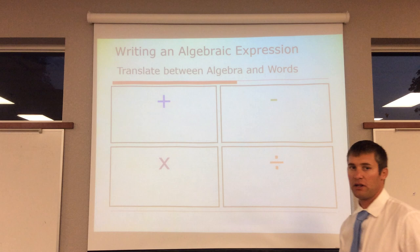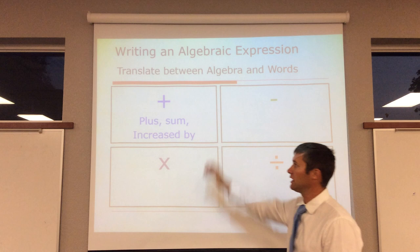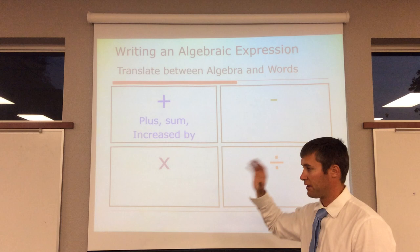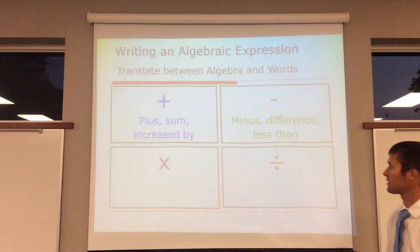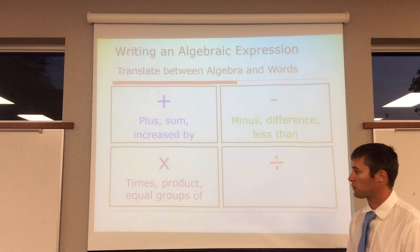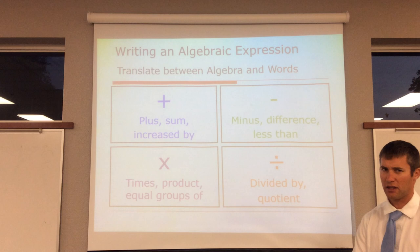So what we're going to go through now is you're going to write an expression, you're going to write an equation using variables. So what I want to go through is the different types of operations that you'll see. Addition: you'll see it as plus, sum, increase by. Subtraction: you'll see it as minus, difference, less than. Multiplication: you'll see it as times, product, equal groups of. And then last, division: divided by, quotient. So write those down.